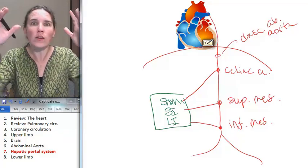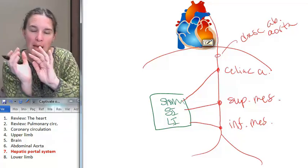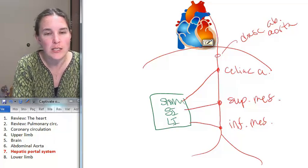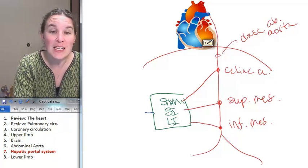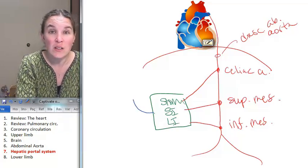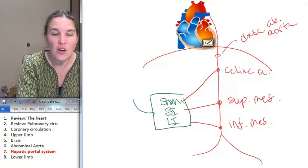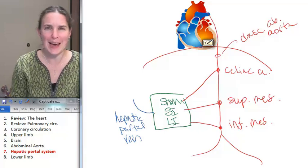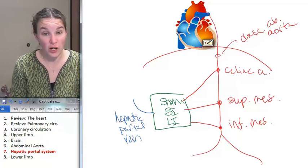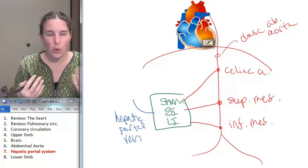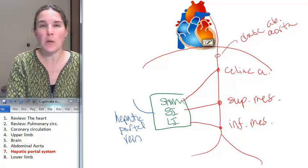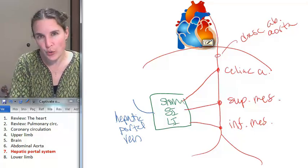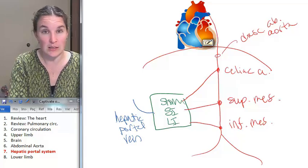And so we need some kind of system to allow us to actually filter that. All of these arteries pass through the stomach, small intestine, large intestine, and then they feed into a single vein, and it's called the hepatic portal vein. And here's the interesting thing. Hepatic makes you think liver. Portal, a portal system. I don't know if you know this yet, but a portal system is two capillary beds in sequence.